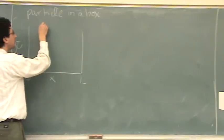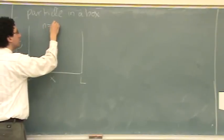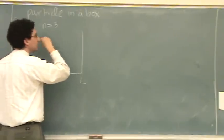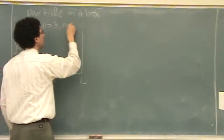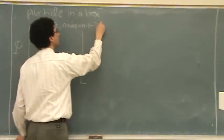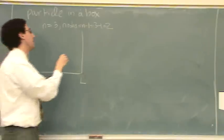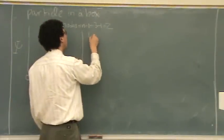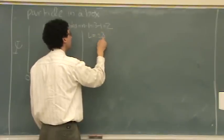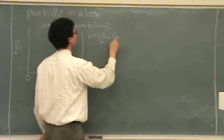We'll do n equals 3. A couple things you'll want to know immediately: the number of nodes is n minus 1, or 3 minus 1, or 2. And then L is n over 2 — so that's 3 lambda over 2.